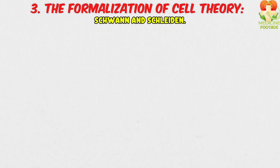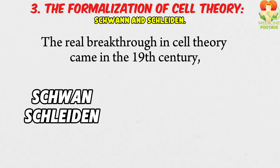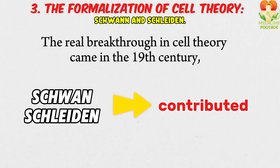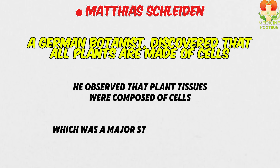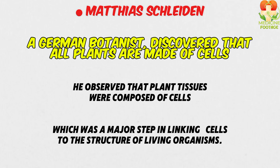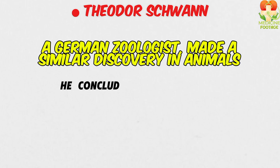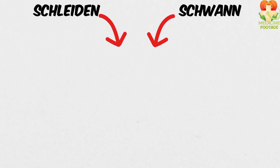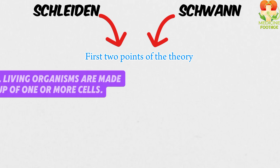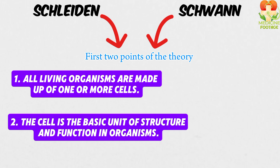The formalization of cell theory: Schwann and Schleiden. The real breakthrough in cell theory came in the 19th century, when two scientists independently contributed to our modern understanding of cells. Matthias Schleiden, a German botanist, discovered that all plants are made of cells — he observed that plant tissues were composed of cells, which was a major step in linking cells to the structure of living organisms. Theodor Schwann, a German zoologist, made a similar discovery in animals, concluding that all animals are made of cells as well. Together, Schleiden and Schwann's findings laid the foundation for the first two parts of cell theory: all living organisms are made up of one or more cells, and the cell is the basic unit of structure and function in organisms.